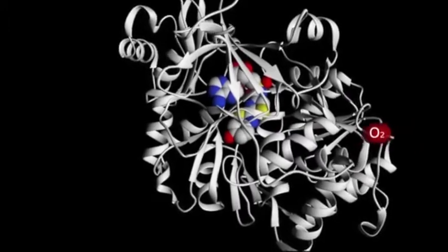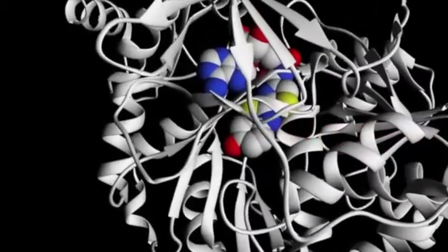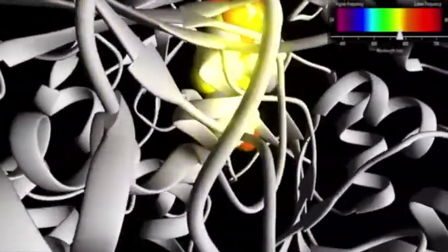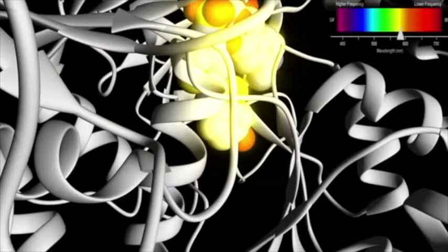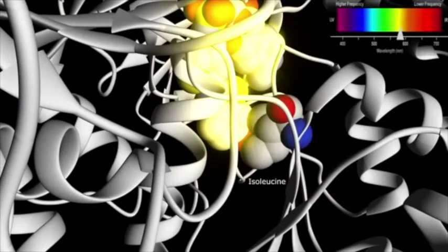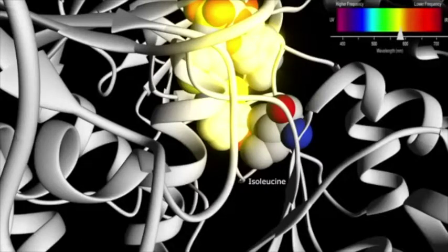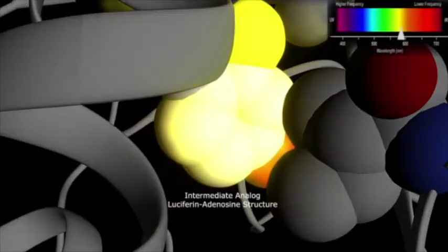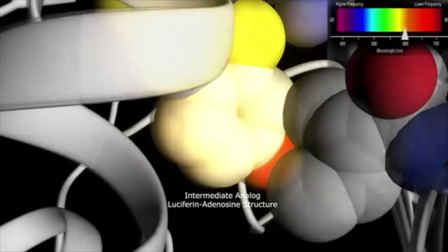The excited state of the oxidized luciferin is tightly bound to a highly rigid hydrophobic microenvironment created by the nearby amino acid isoleucine and the oxygen molecule, minimizing energy loss before emitting yellow-green light. The wavelength associated with the yellow light caused by the molecule reaching its excited state is 560 nm. The color of the light produced during bioluminescence can be different depending on the size and hydrophobicity of the side chain of the amino acid isoleucine. The wavelength associated with the red light results in a lower energy level of 613 nm.